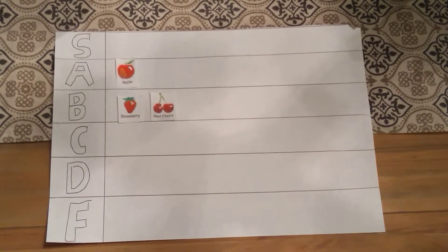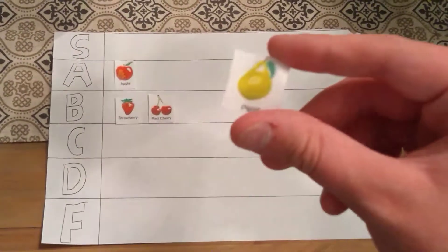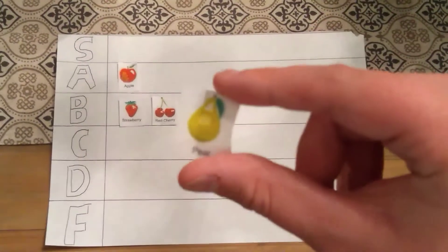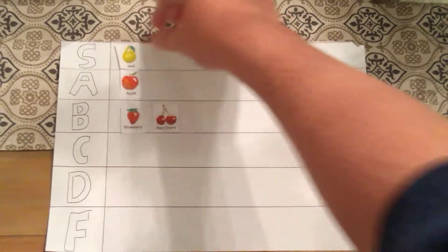Alright, next up, we have pears. Now, the thing I've heard about pears is that you either hate them, or you love them. And I love pears, so we're going to be putting it in the B tier.